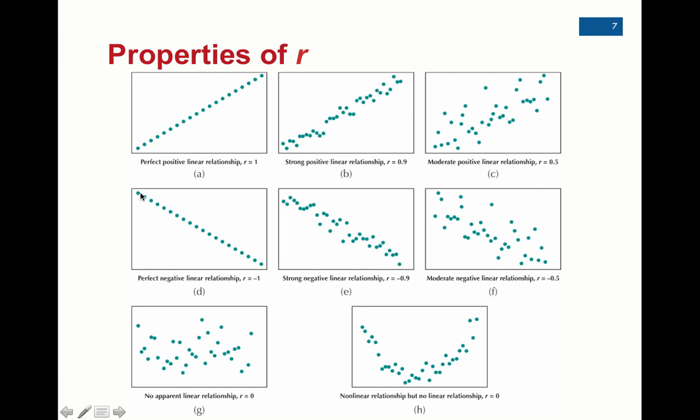Let's look at negative relationships. Here's a perfect negative correlation where every data value fits on a line, so that would be negative 1. Remember, this correlation coefficient is not describing the slope of the line, it's just telling you how strong the relationship is. Our mirror image of b would be e, where we have a strong negative relationship at negative 0.9. The mirror image of c is f, where we have a moderate negative relationship at negative 0.5.